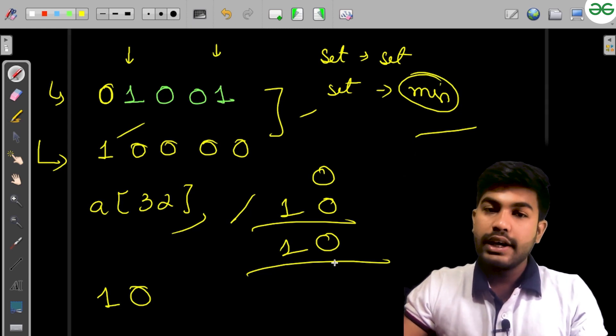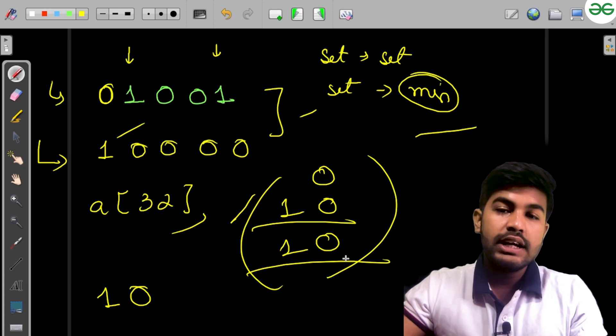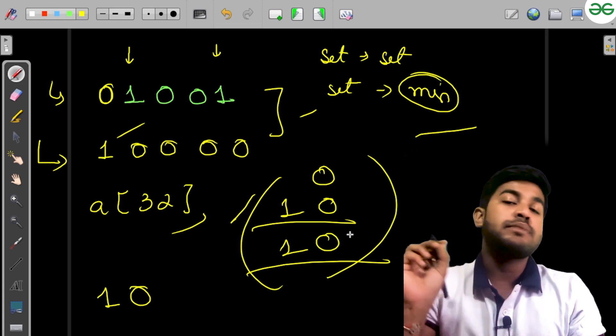We'll use the OR function. When the bit is not set, we'll try to set that bit and check what the minimum value is.